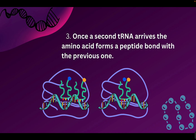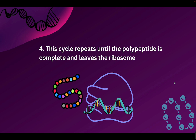This continues: a second tRNA arrives with the next codon using its anti-codon. Once at least two amino acids are in place, a peptide bond forms between them. That allows the first tRNA to leave and the second tRNA to move over as the mRNA continues to be read. This cycle keeps repeating until we have a polypeptide — multiple peptide bonds, which is what the chain of amino acids is called. Once this polypeptide is complete, it detaches and leaves the ribosome, and now it has the ability to fold into the protein shape it needs to be.